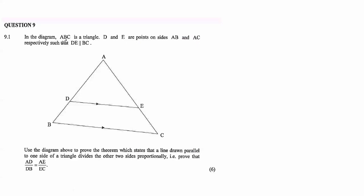We have Question 9 on proving the proportionality theorem. It says: in the diagram, ABC is a triangle, D and E are points on sides AB and AC respectively, such that DE is parallel to BC. They say use the diagram above to prove the theorem which states that a line drawn parallel to the side of a triangle divides the other two sides proportionally — that is, prove that AD over DB equals AE over EC.